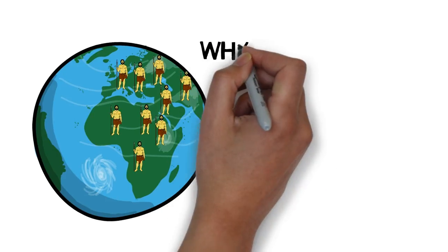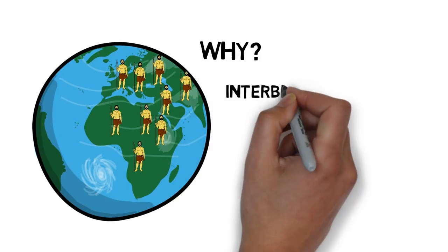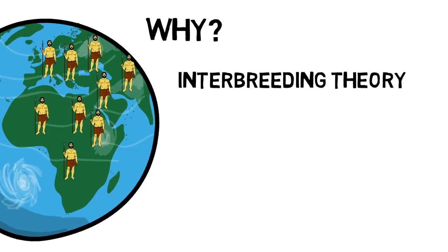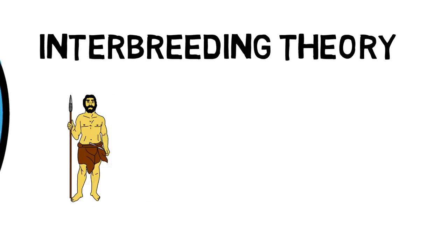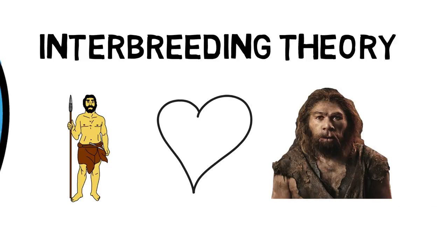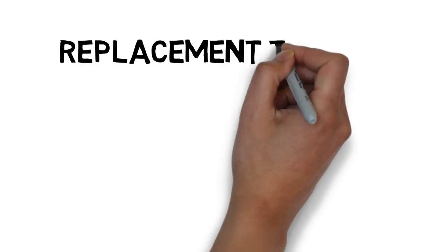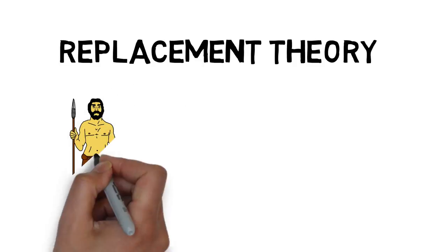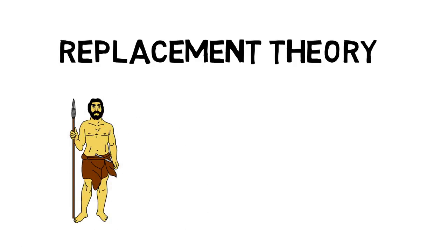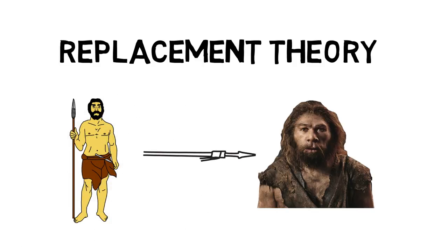There are two theories. The interbreeding theory suggests that Homo sapiens began mating with other species of human, and that resulted in the species gradually merging together. The replacement theory suggests that Homo sapiens, thanks to their slightly superior skills and technology, pushed other human species toward extinction.